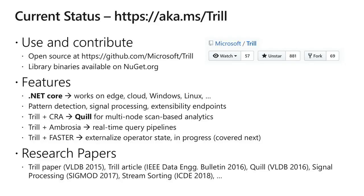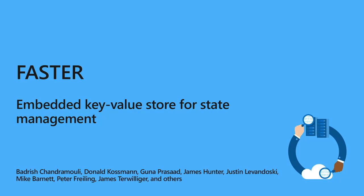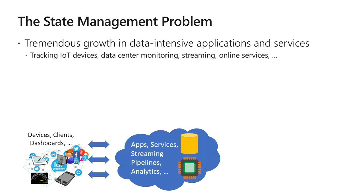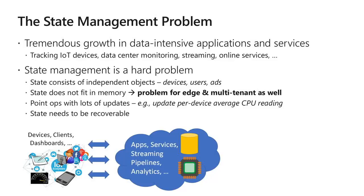The next project is FASTER, a relatively newer embedded key-value store for state management. It grew out of our experience with Trill, which was used in large-scale distributed pipelines managing huge amounts of state. For example, in Bing they have billions of users or ads for which you maintain state and update it as new data arrives. This also includes stateful applications such as IoT device tracking and data center monitoring. By state, I mean a large number of independent objects — users or advertisements — each with some state like a machine learning model or statistics.